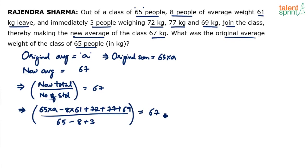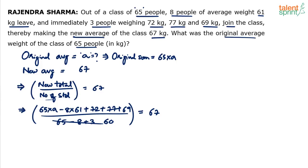This should equal the new average of 67. So simplify to find A, the original average. The denominator is 65 minus 8 plus 3, which is 60. Now work on the numerator: minus 8 times 61 gives minus 488. So we get 65A equals 60 times 67 minus 488 plus 72 plus 77 plus 69 rearranged.